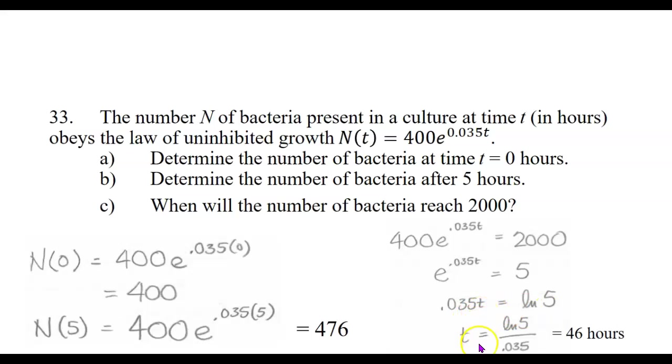Then divide both sides by the 0.035, and t comes out to be the ln of five divided by 0.035, and that if you round it to the nearest number of hours is about 46 hours.